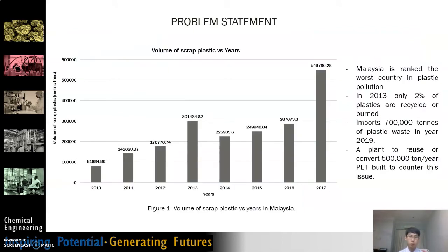In the UK, 5 million tonnes of plastic is consumed each year and only 25% is recycled, while 75% is thrown away and pollutes the environment, especially the oceans, causing damage to the ecosystem. Malaysia is also facing a similar problem since 2010. In 2010, a total of 81,884 metric tonnes of scrap plastic were accumulated, increasing to 549,786 metric tonnes by 2017, making Malaysia one of the worst countries in plastic pollution. In order to combat this problem, a plant which converts 500,000 tonnes of PET per year is proposed.